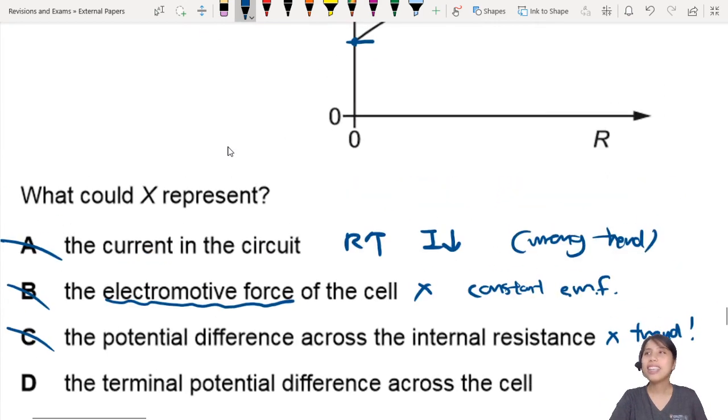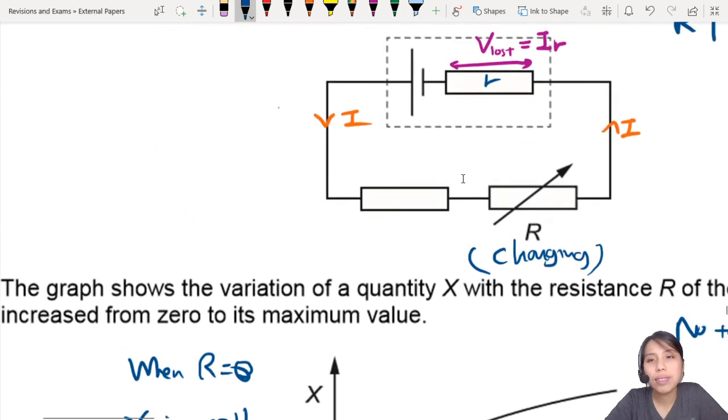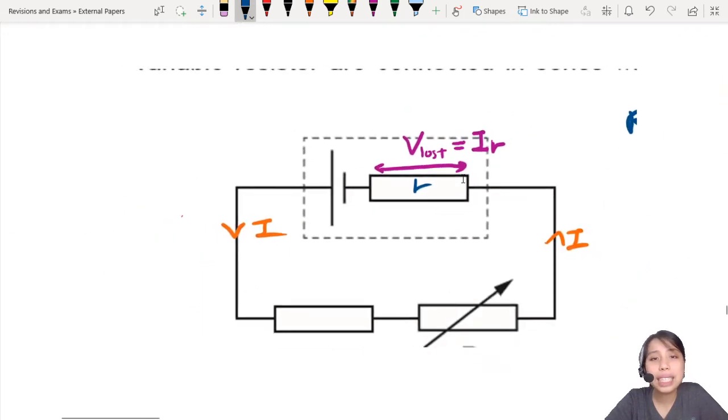Behind my head. There it is. So, the last choice is terminal potential difference across the cell. And that's the only answer left. Let's circle it. But let's also double check terminal potential difference across the cell. What is terminal potential difference? This is what we call terminal PD.